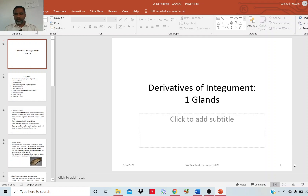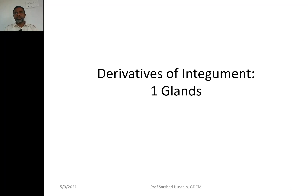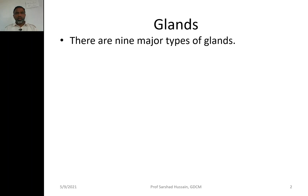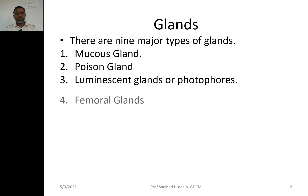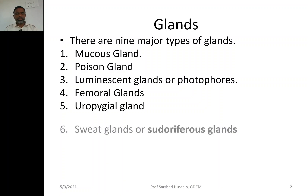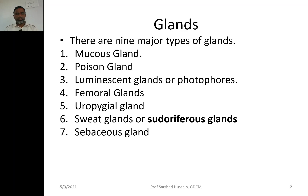Dear students, I am Sarsha Hussain. Let us talk about the derivatives of the integument. Today we shall discuss one category of derivatives — glands. There are many glands derived from the integument. In total, there are nine major types: mucous gland, poison gland, luminescent gland or photophores, femoral glands, uropygial glands, sweat glands or sudoriferous glands, sebaceous gland, scent gland, and mammary gland.